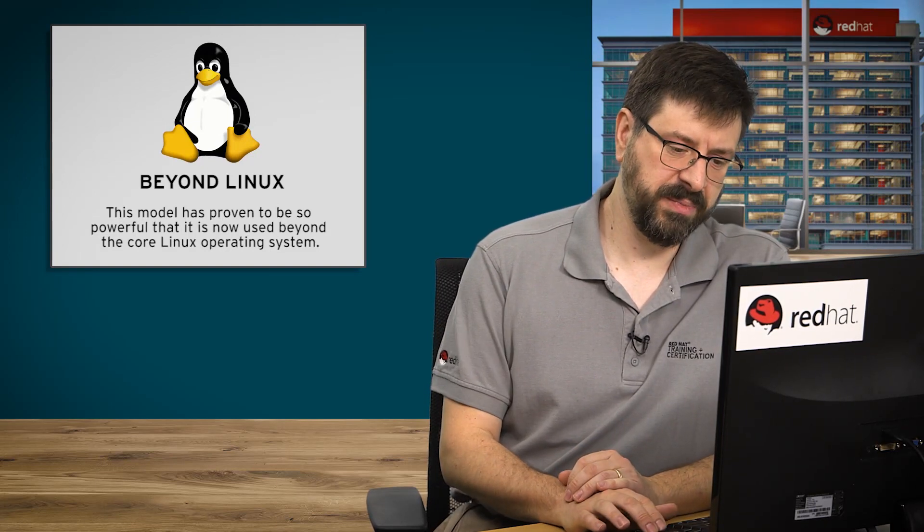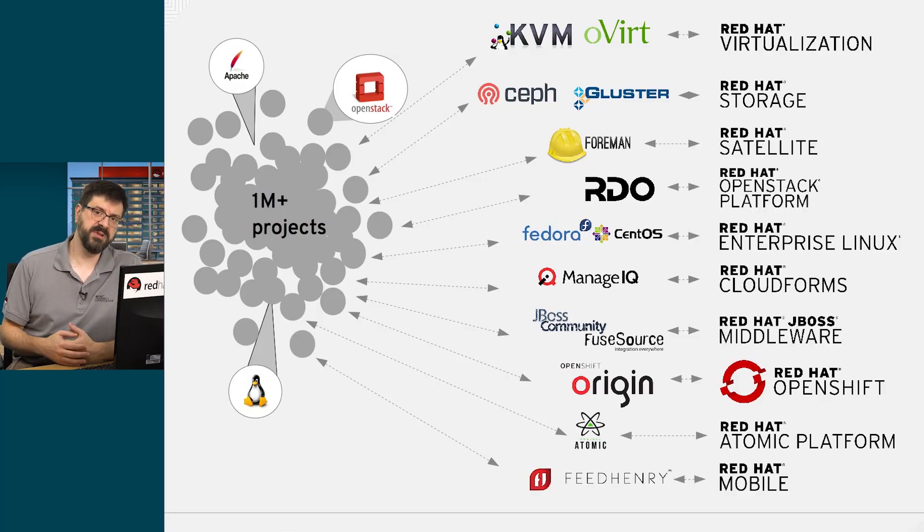We can see that there are different ways distributions engage with their communities, different ways they provide support, and different advantages and disadvantages. But this distribution model has proven to be so powerful — especially this two-phase model, where we have open integration before providing a commercially supported product — that it's used beyond the core Linux operating system. We use this model to help test, solidify, and support many products by working with the upstream community and then integrating that into products that can be supported commercially for the long term.